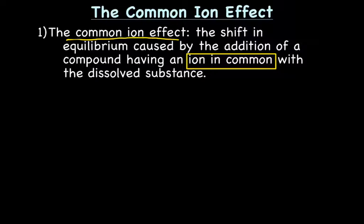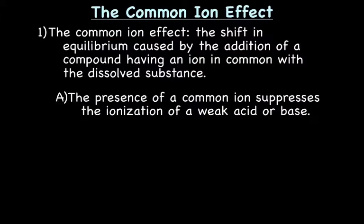I'll give you examples in a moment and this will make more sense, but basically what you're doing is you're taking two different things, dissolving them in the same solution, and when they dissolve one of the ions is in common. So the presence of a common ion suppresses the ionization of a weak acid or base. It reduces the ionization of a weak acid or base.